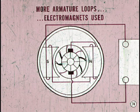Of course, a starting motor has more armature loops, more commutator segments, and electromagnets are used in place of permanent magnets. However, the basic principle remains the same.